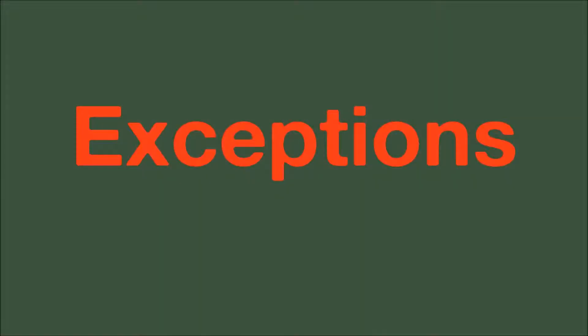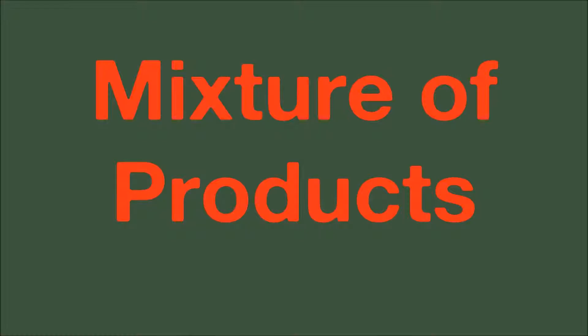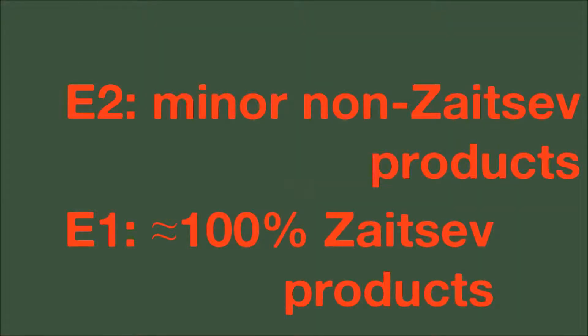Zaitsev's rule is not absolute. The mixture of products for some elimination reactions is all the evidence necessary. Chance is not the only way to break Zaitsev's rule — the type of elimination reaction plays a large part in whether less substituted alkenes are possible. E2 has a higher chance of non-Zaitsev products.